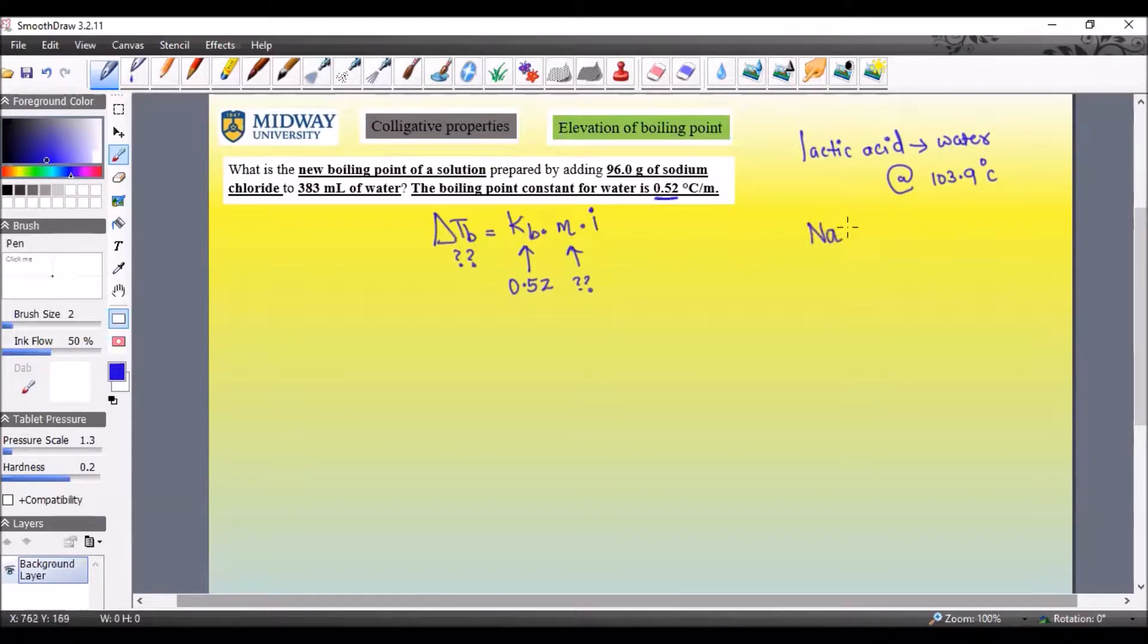The molality we don't know but we can find it. i is the Van't Hoff factor. Now we're dealing with sodium chloride, NaCl. Sodium is +1, chloride is -1, there's one of each, so we know i equals 2.